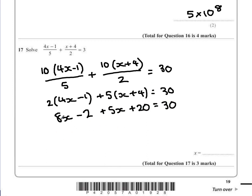Gather all your terms together, so 8x add 5x gives me 13x, 20 take away 2 is 18, and that's equal to 30 still, and then take away 18 from both sides. So we end up with 13x is equal to 12.